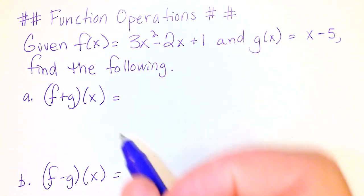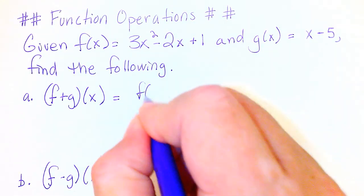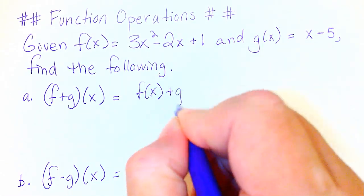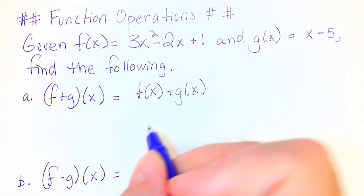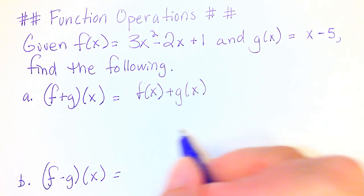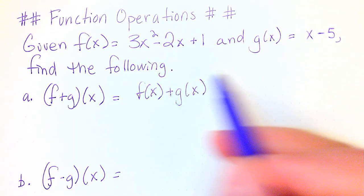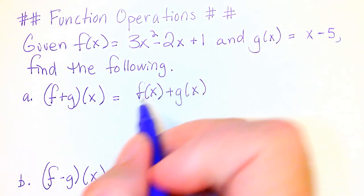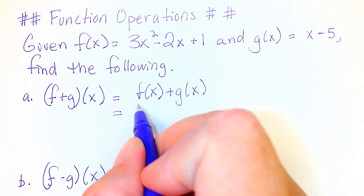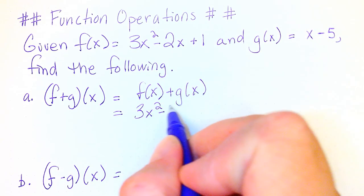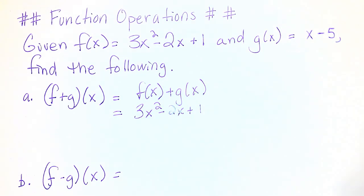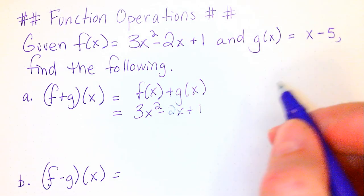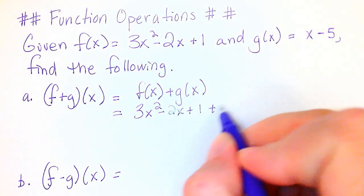We can rewrite this notation as f(x) + g(x) and then we can substitute in for our f(x) and g(x) functions. f(x) in this case is 3x² - 2x + 1. g(x) in this case is x - 5.